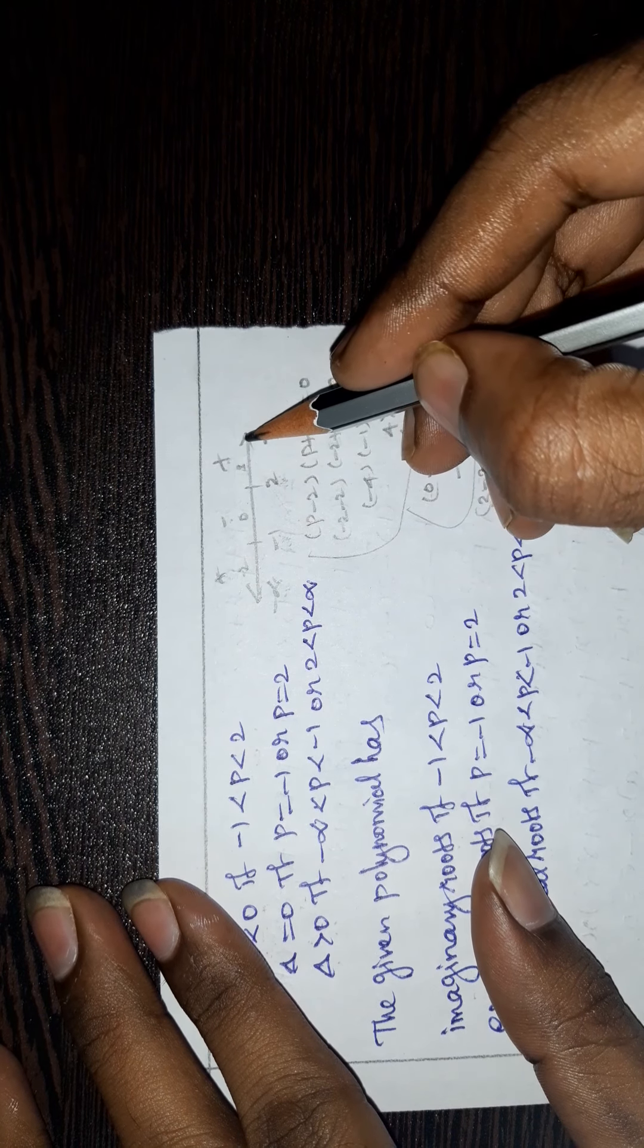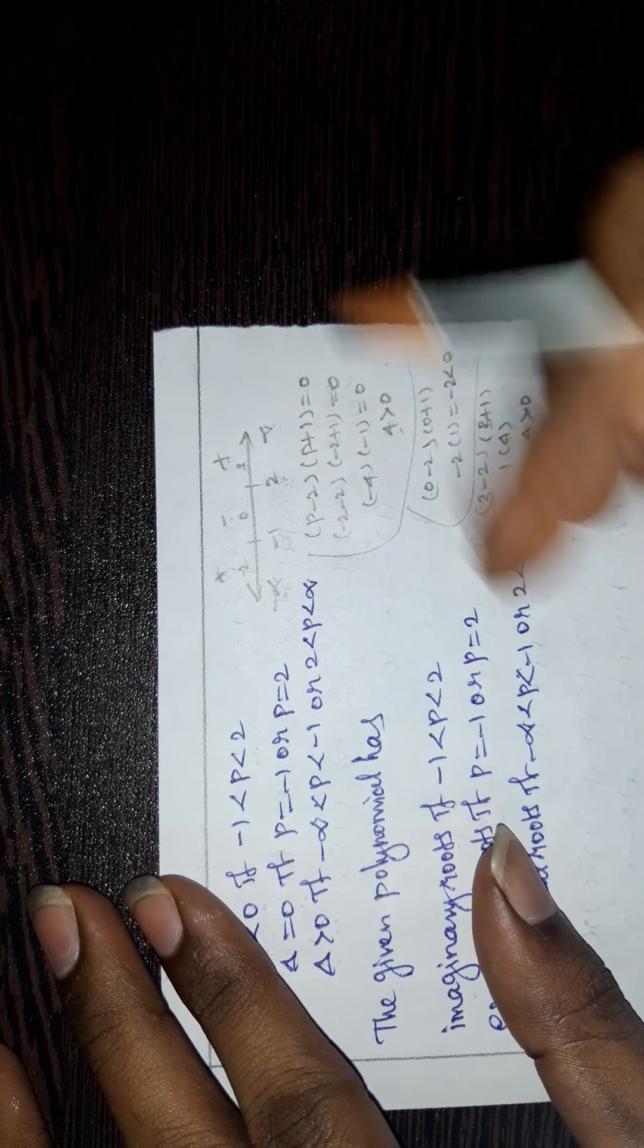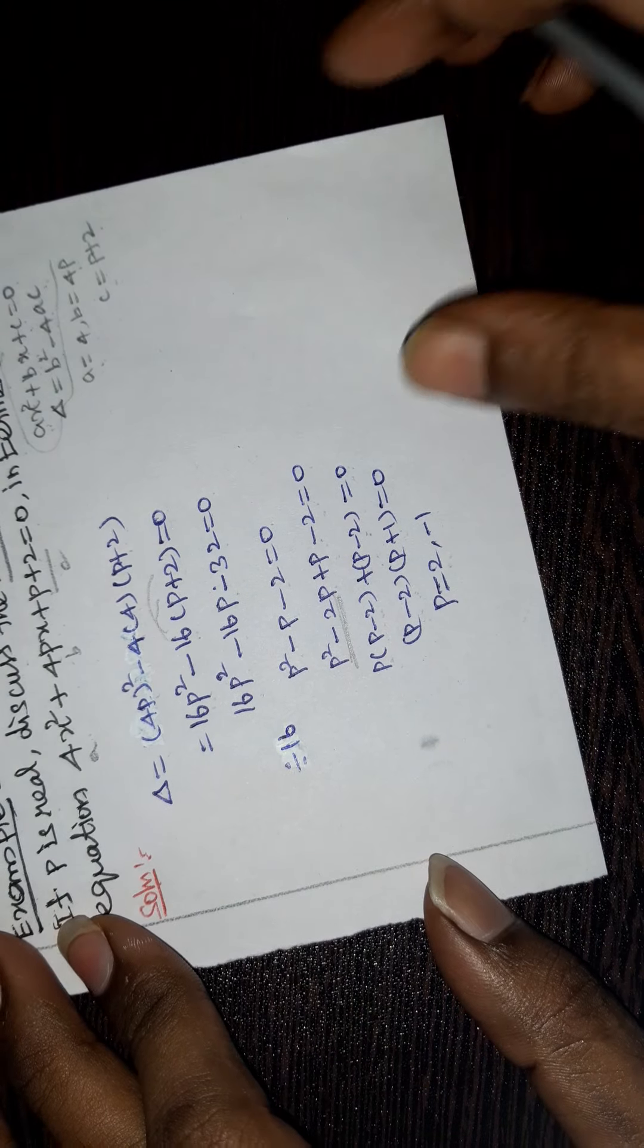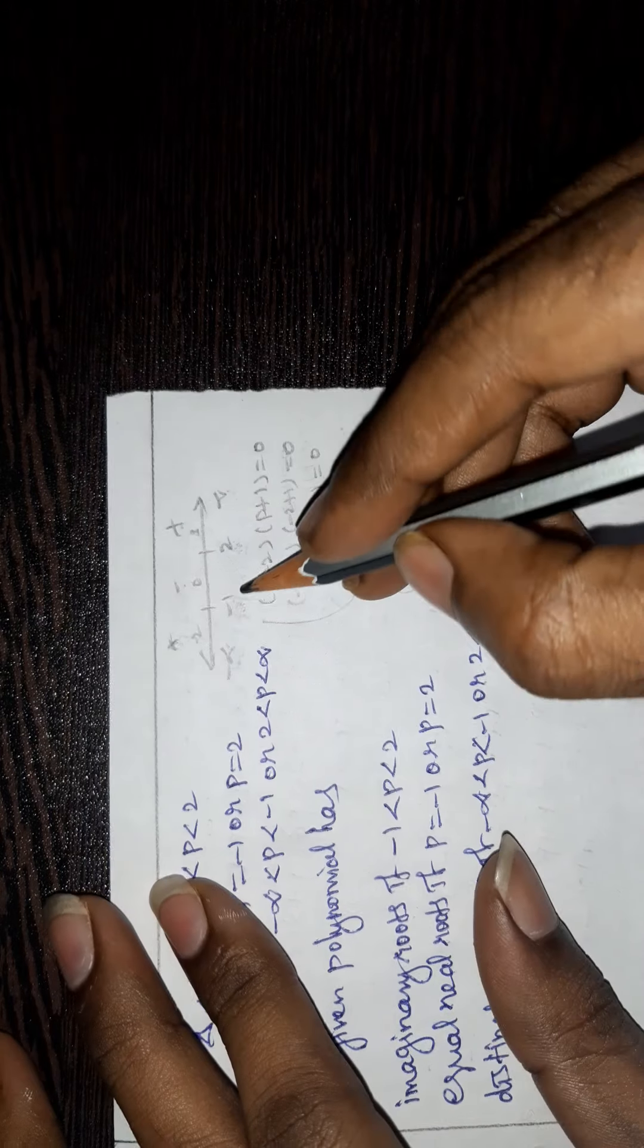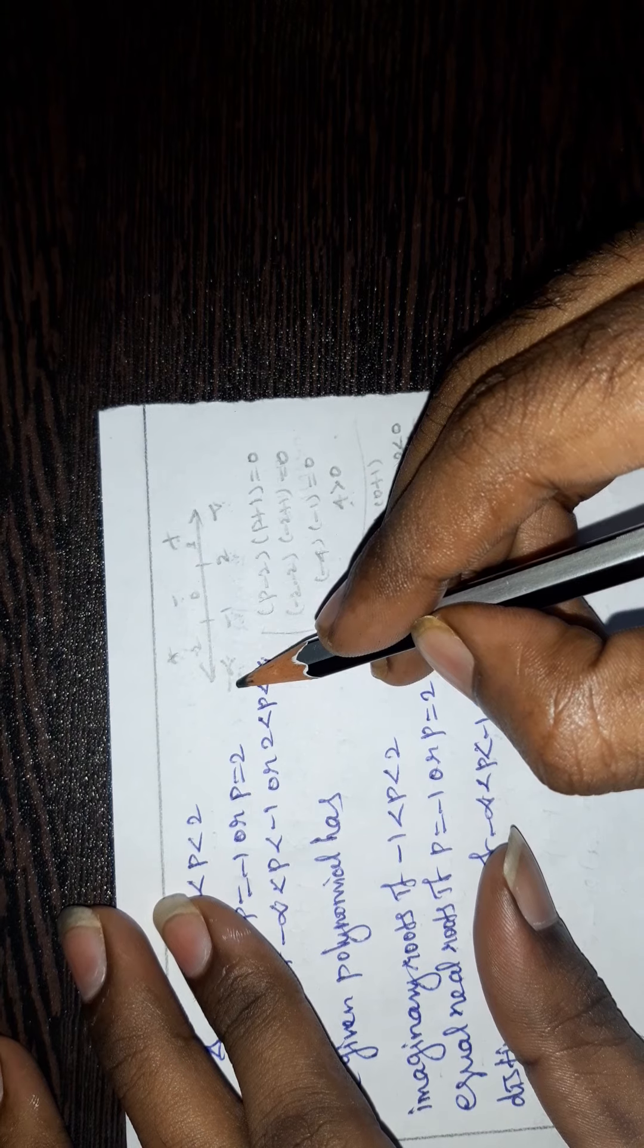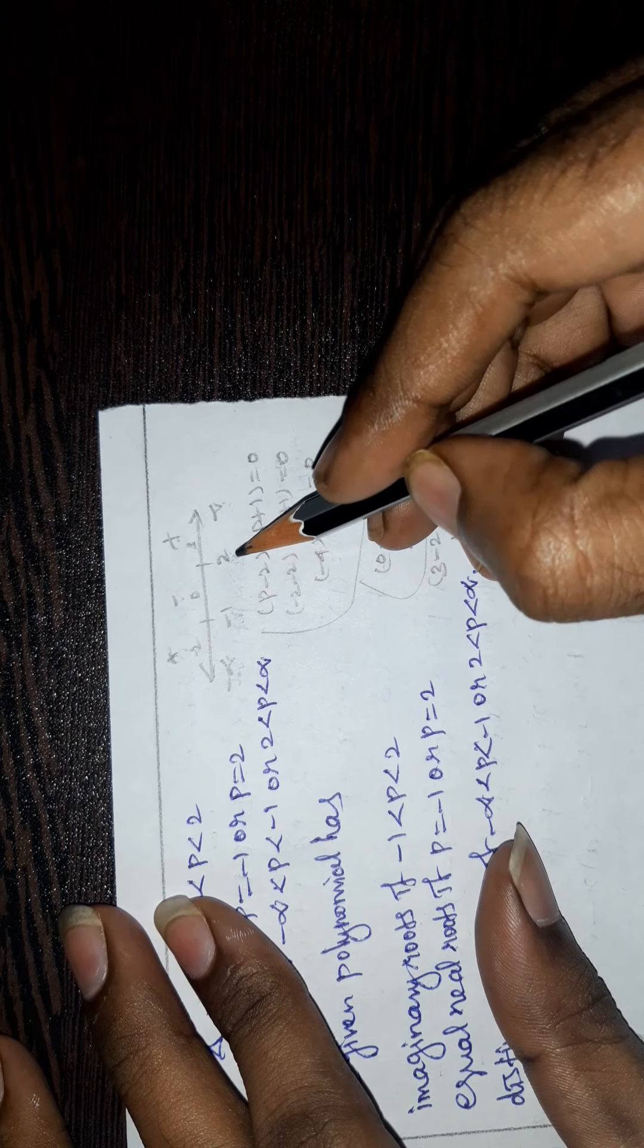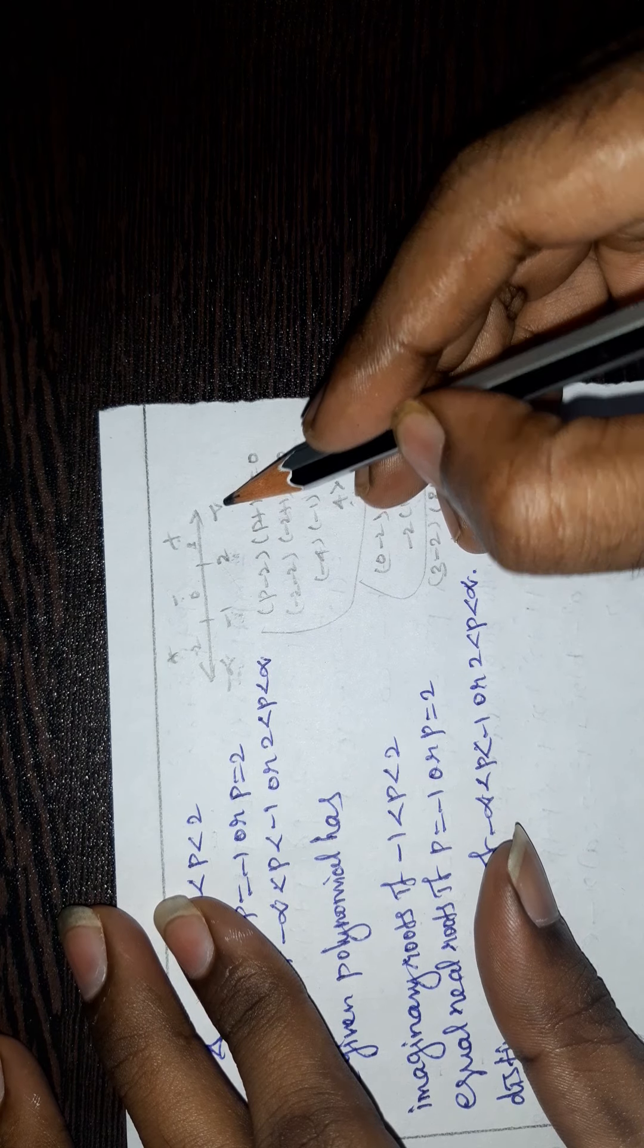Take the number line from minus infinity to plus infinity. The critical points are -1 and 2. We have three regions: minus infinity to minus 1, minus 1 to 2, and 2 to infinity.